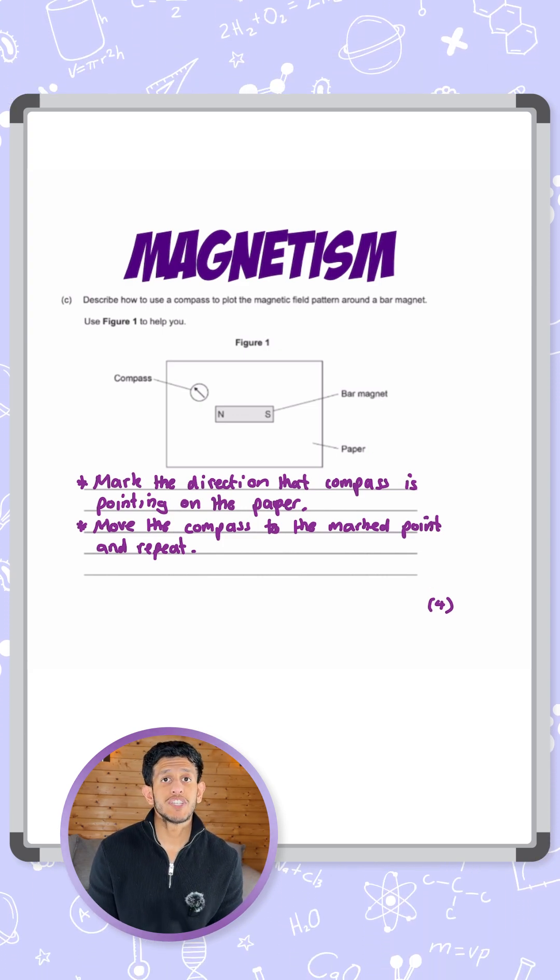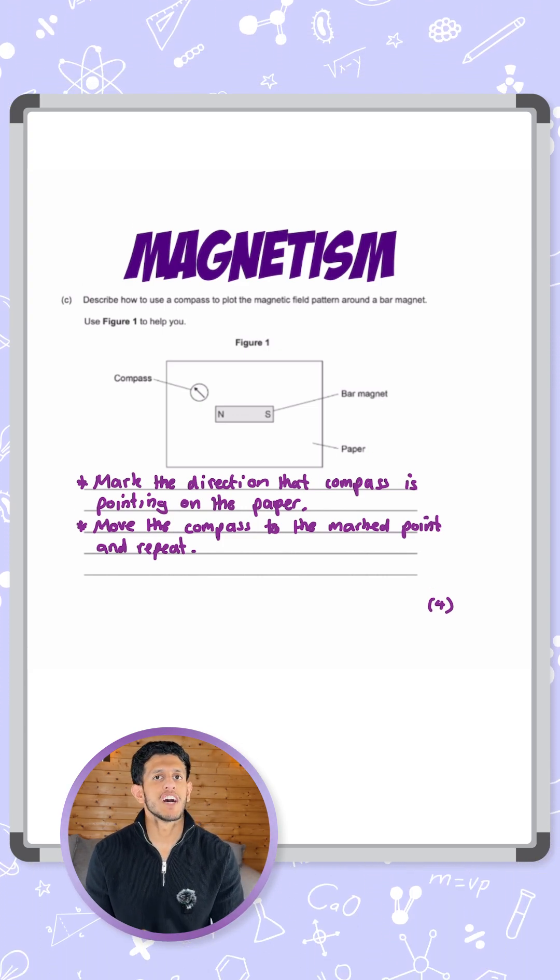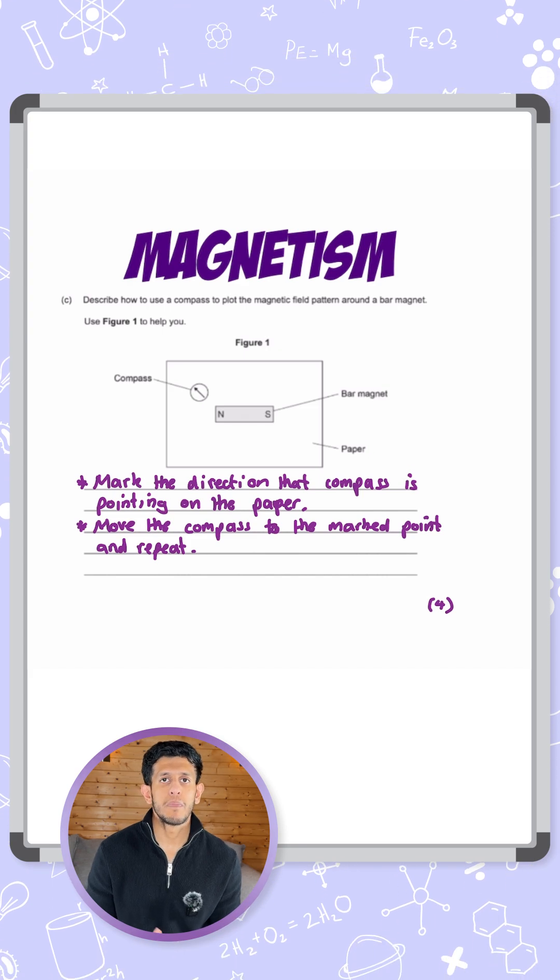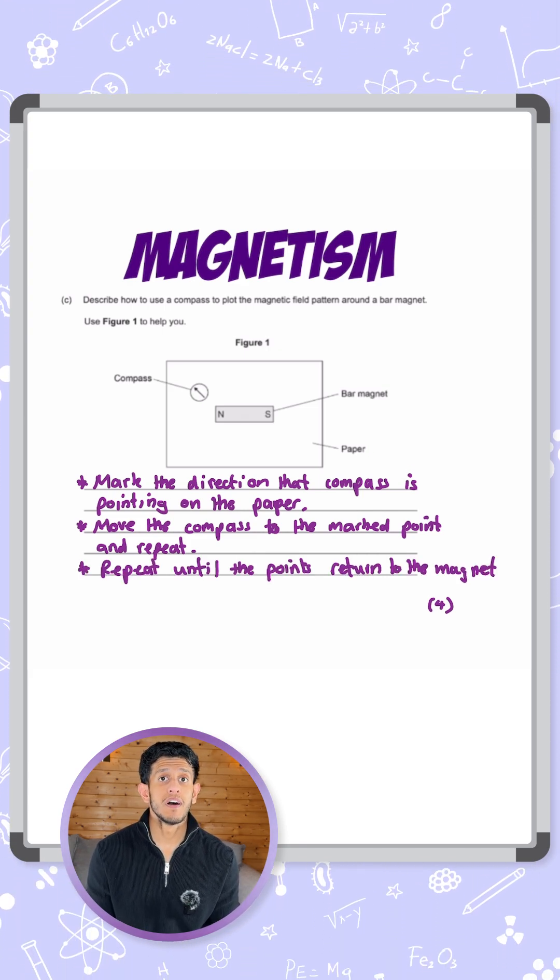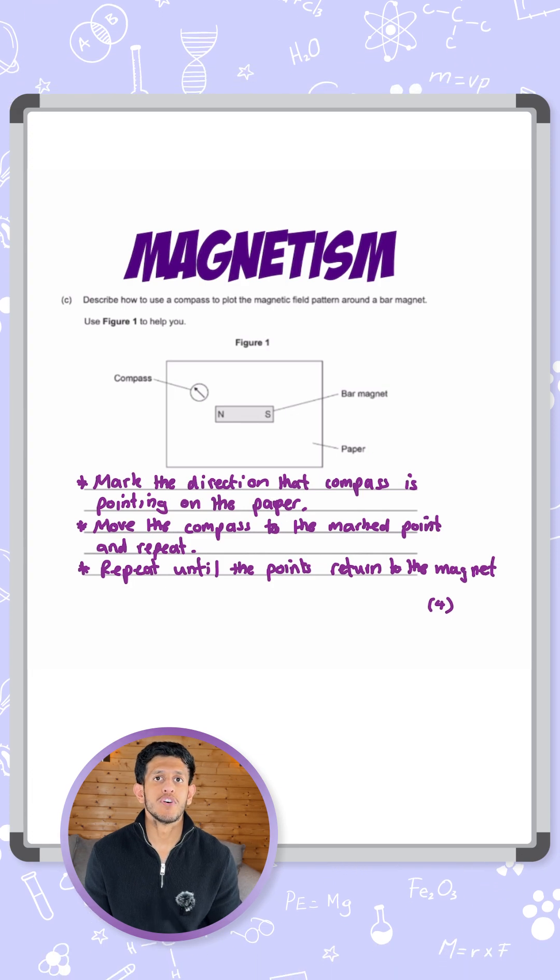You want to keep doing this and eventually you should get from the north pole to the south pole of the magnet. The third step is to repeat this until we reach the south pole. Now you have all those points on the piece of paper, the next step is to join all of those points together.